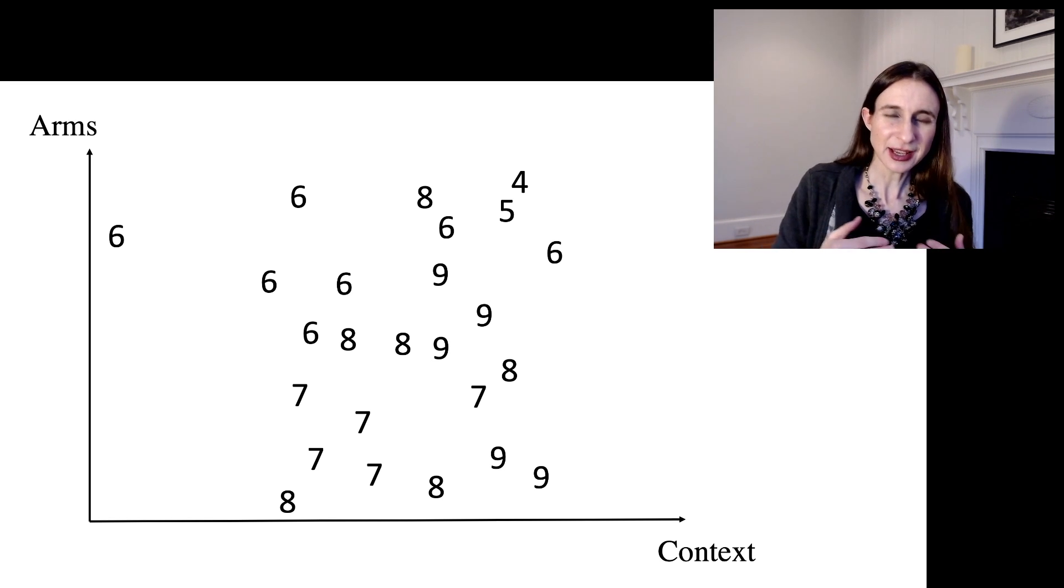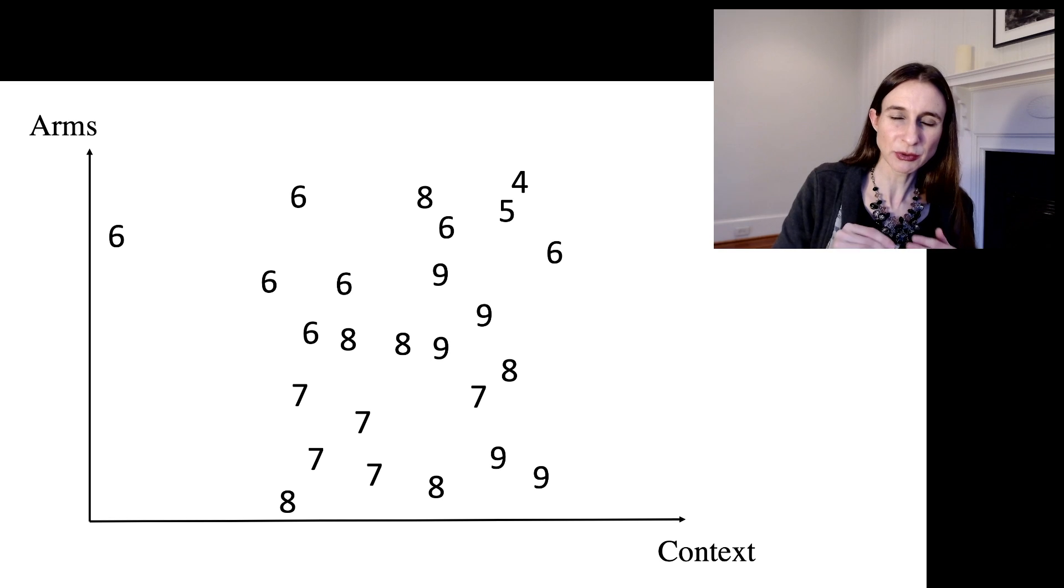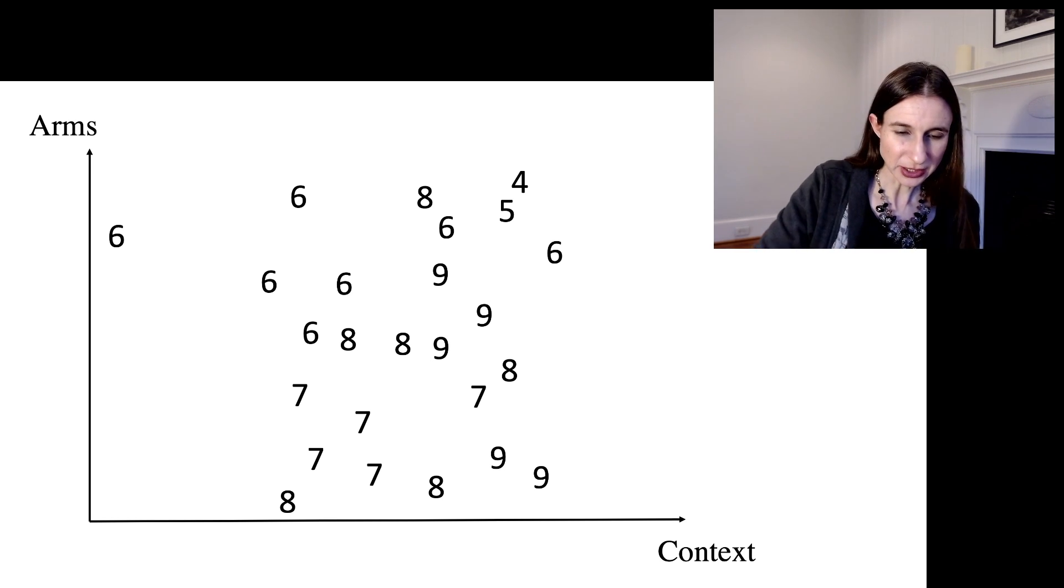Well, as long as I can create an upper confidence bound for the mean of the arm's reward at each context, then I can use something like UCB. So I'm just going to show you one way to do that.